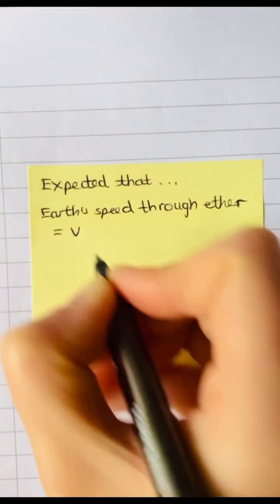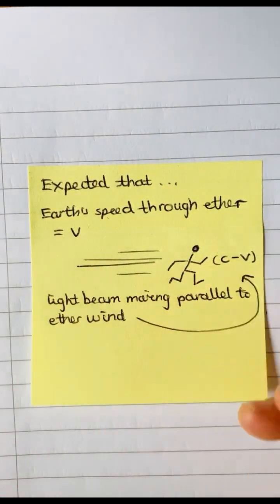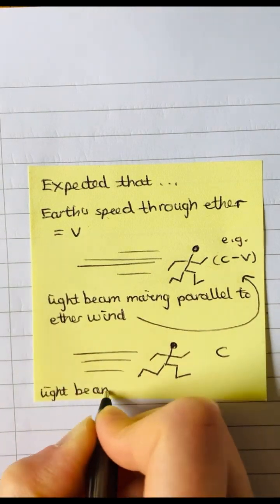The beams of light travelled the same distance through glass and air. What they expected was for the light beam travelling parallel to the Earth's motion through the ether to travel at a different speed to the light beam travelling perpendicular.